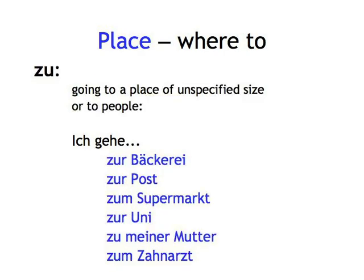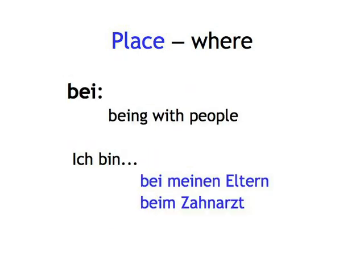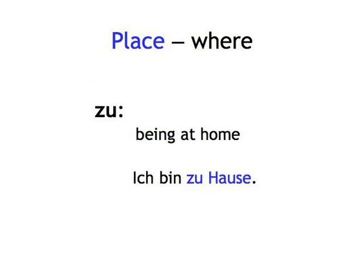If you're going to a place of unspecified size or to people, use 'zu': ich gehe zur Bäckerei, zur Post, zum Supermarkt, zur Uni, zu meiner Mutter, zum Zahnarzt. Where — if you're talking about being in a place with a name or in a location, use 'in' followed by the dative: ich bin in Zürich, in der Schweiz, im Kino, in der Bäckerei. If you're talking about being with people, use 'bei' followed by the dative: ich bin bei meinen Eltern, beim Zahnarzt. If you're talking about being at home, use 'zu': ich bin zu Hause.